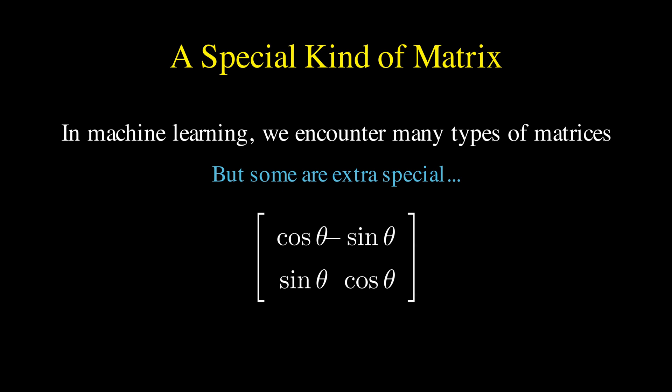One particularly important class is called orthogonal matrices, and they appear everywhere from neural network initialization to dimensionality reduction algorithms. So what exactly is an orthogonal matrix?